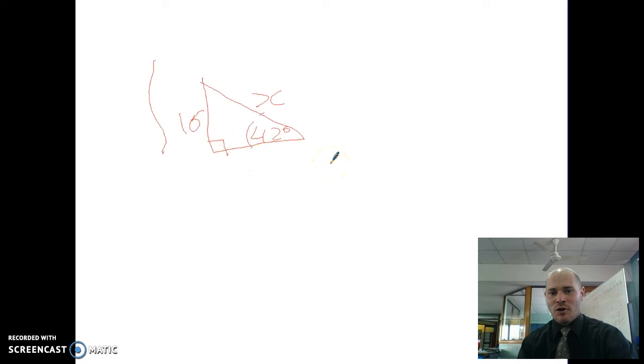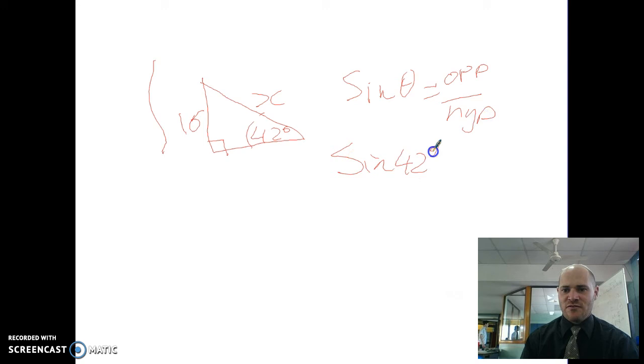So again, am I using my hypotenuse? The answer is yes. What's my other side? It's the opposite side. So I go to my SOHCAHTOA, opposite and hypotenuse is the S. So sine equals opposite over hypotenuse. I sub my values in so it becomes sine of 42 degrees equals 16 over x.